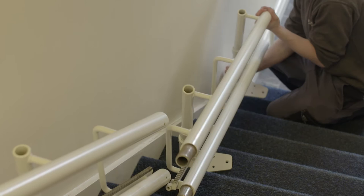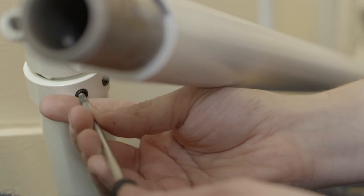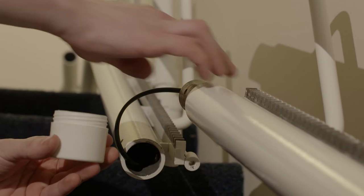Adjust the rail sections and bases to approximate height using the installation drawing. Gently tighten the grub screws on each base. These will need to be adjusted later.